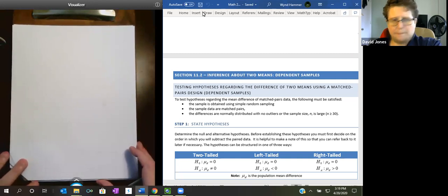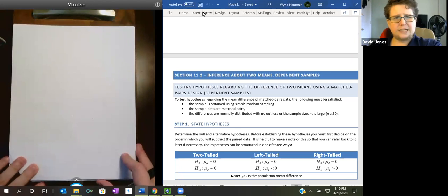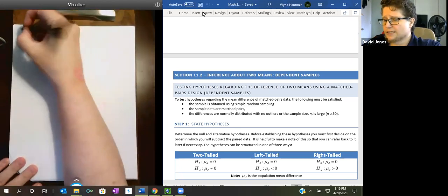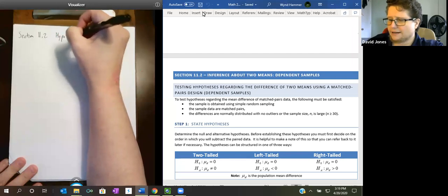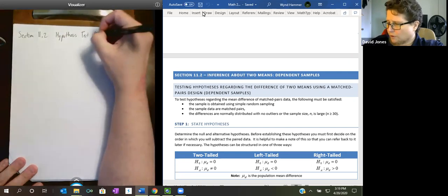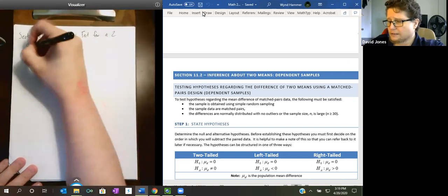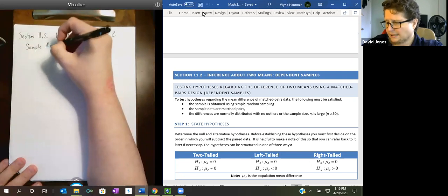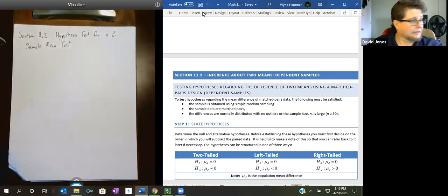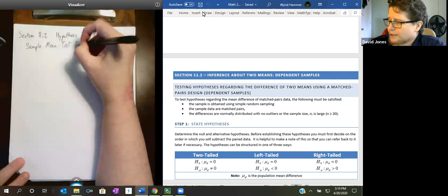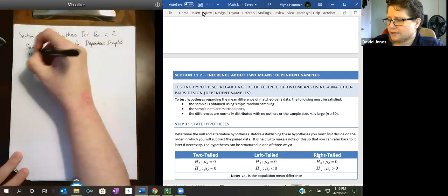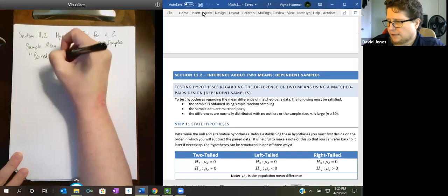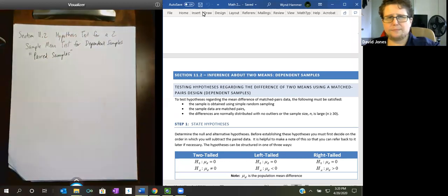In this section we're going to be talking about doing some hypothesis testing on the means for two dependent samples. So this is section 11.2, a hypothesis test and corresponding confidence intervals for a two sample mean test for dependent samples. And you might ask why. Why would we ever want to use dependent samples? Because everything we've done so far has been independent.